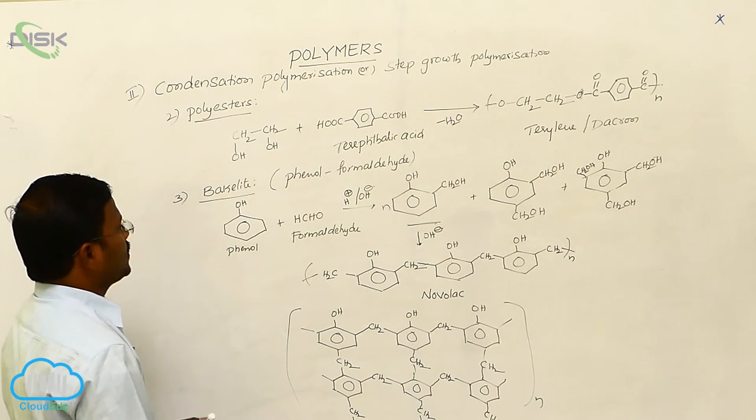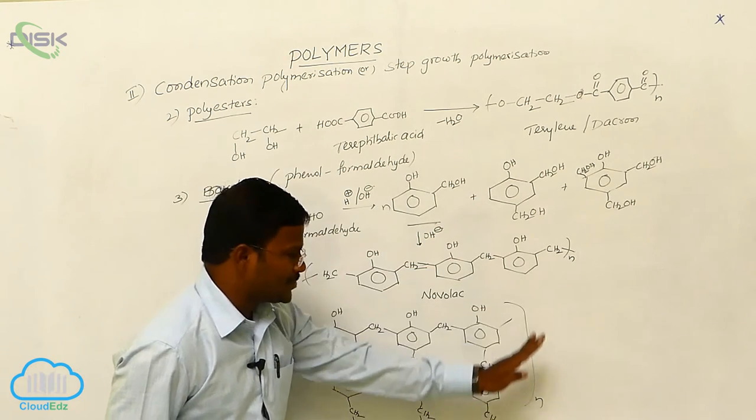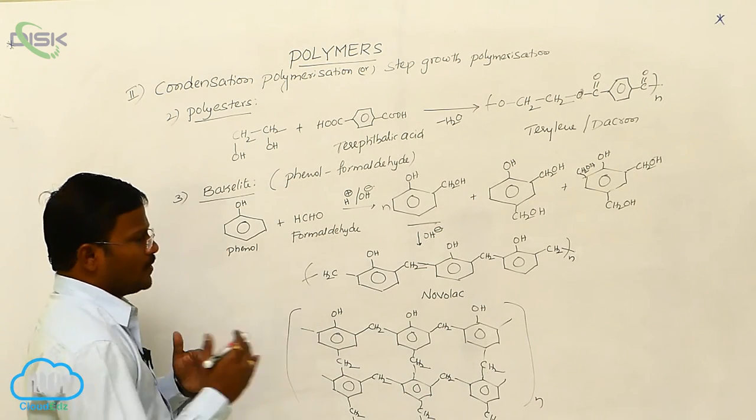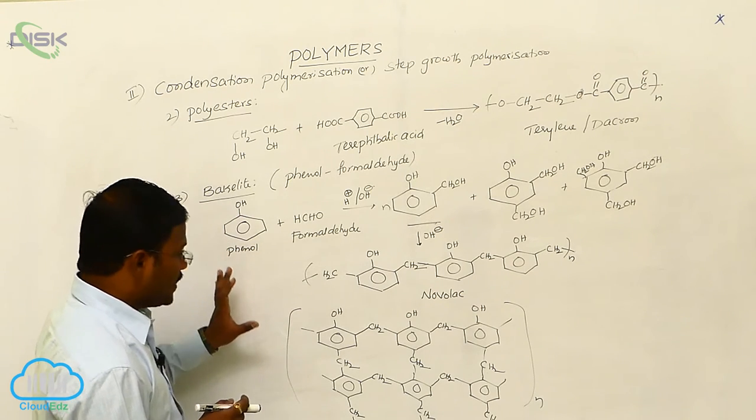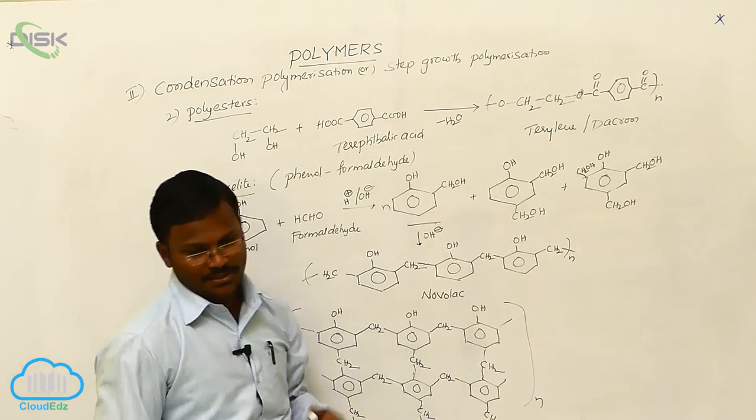So this is one example and the way of preparation. During the preparation of Bakelite there is loss of neutral species. Hence it is called condensation polymerization or step growth polymerization.